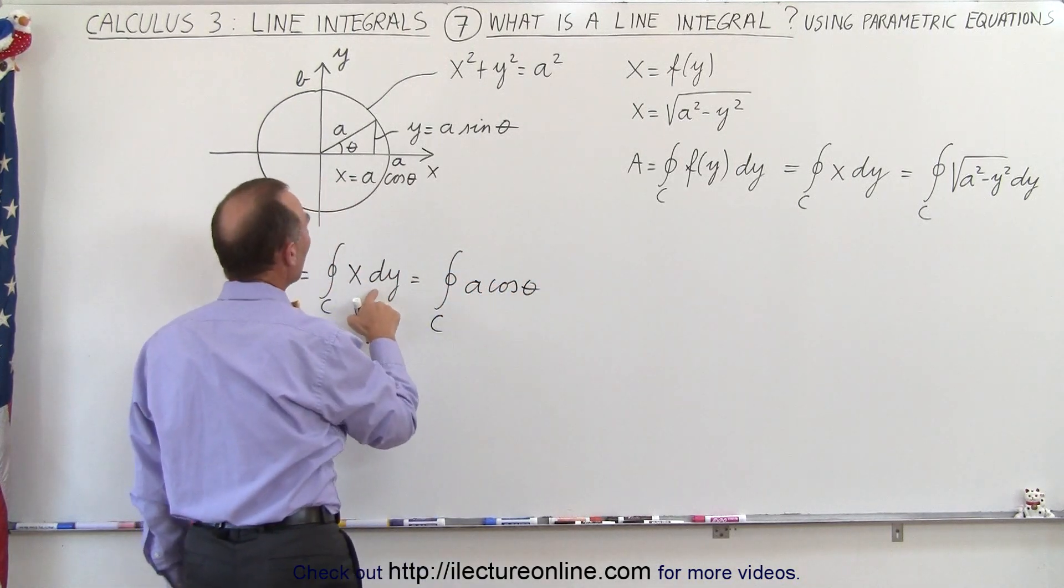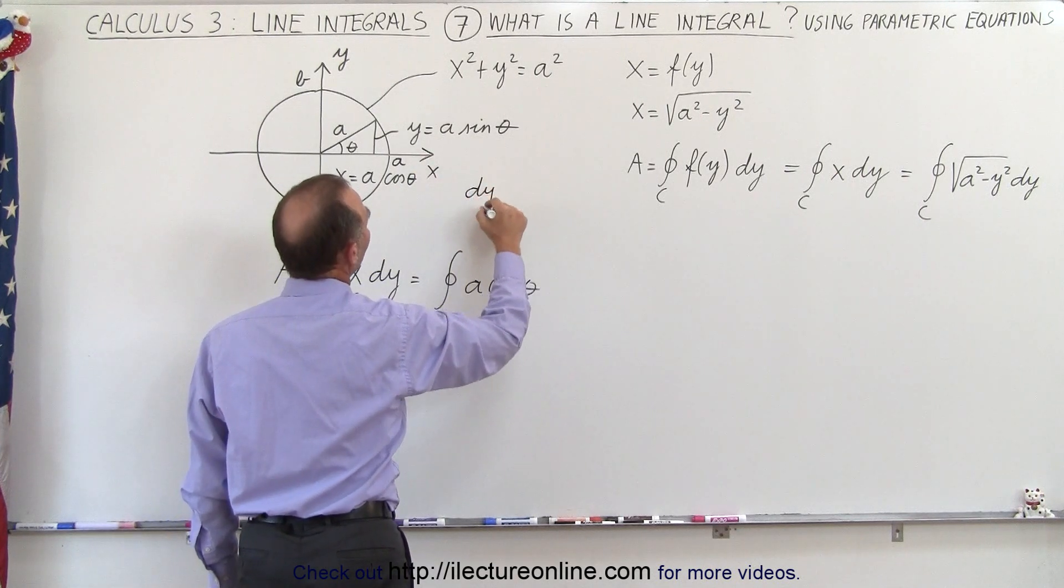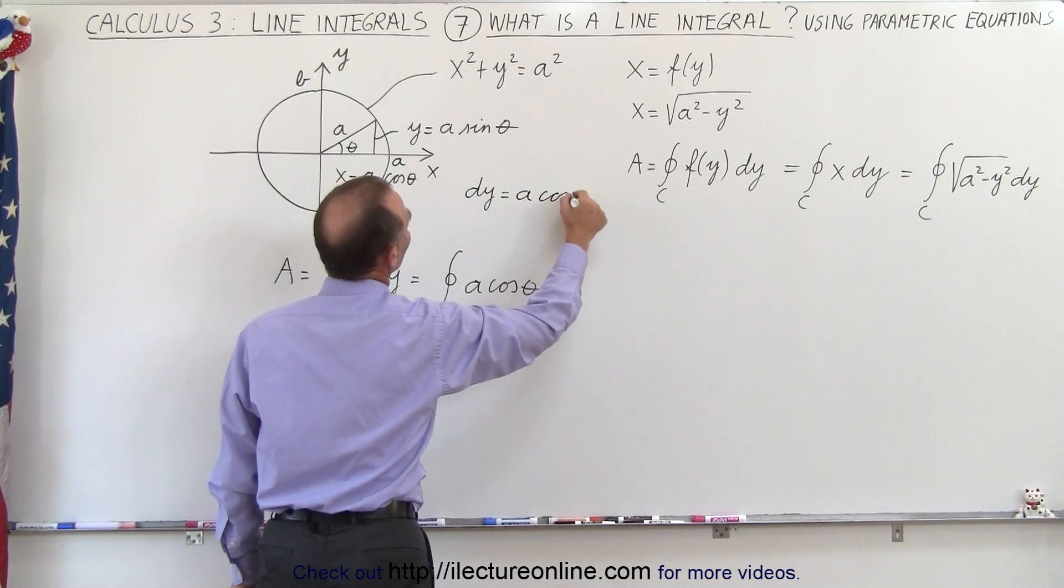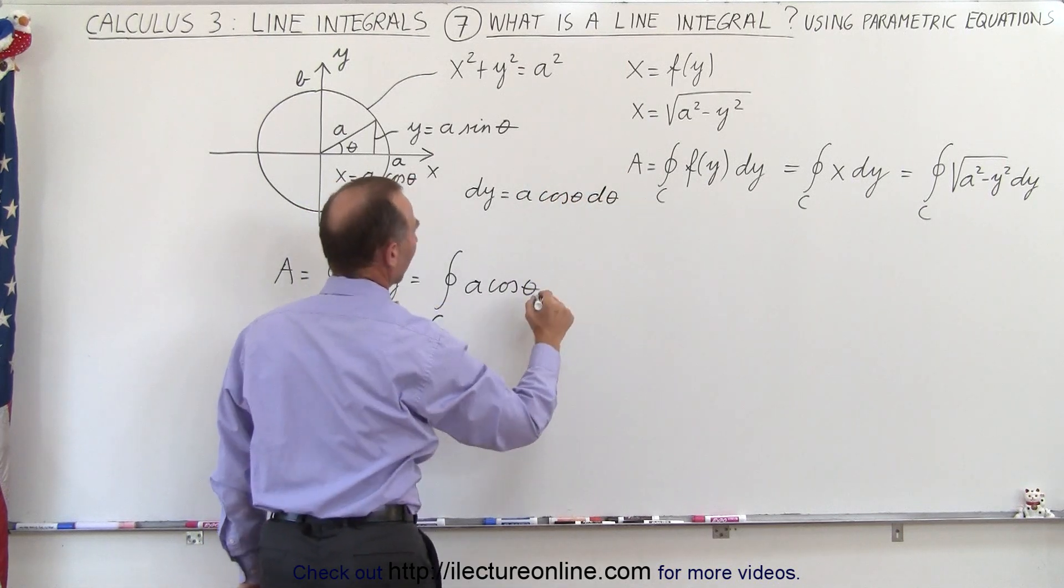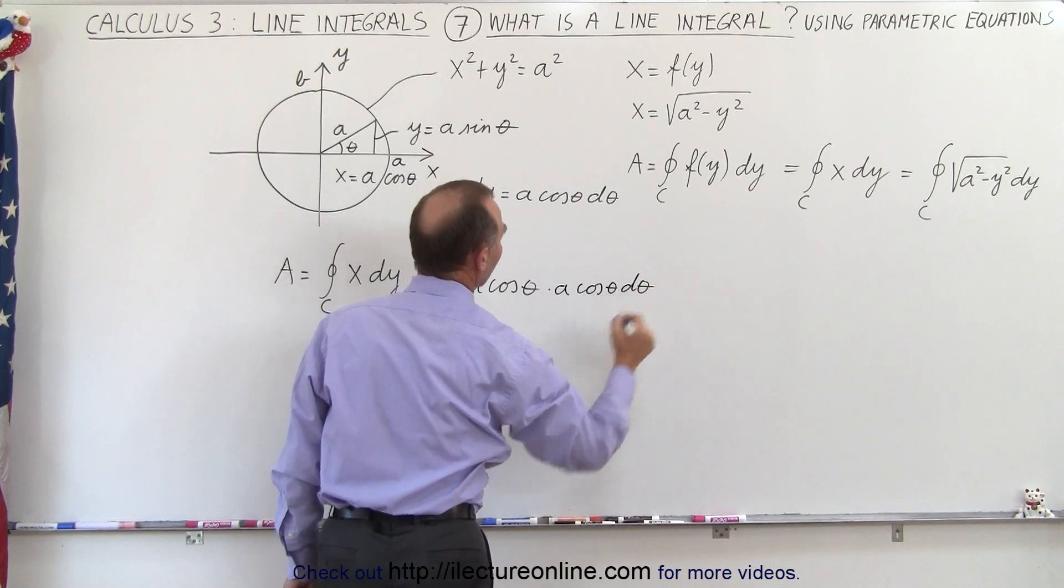And instead of dy, well, since y is equal to a sine theta, that means that dy is going to be equal to a times the cosine of theta d theta. So that's times a cosine theta d theta.